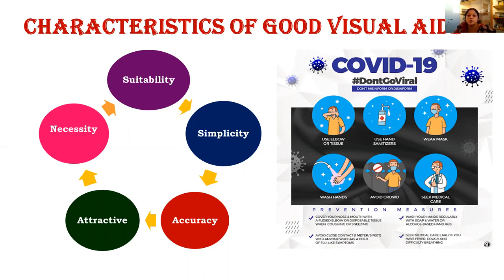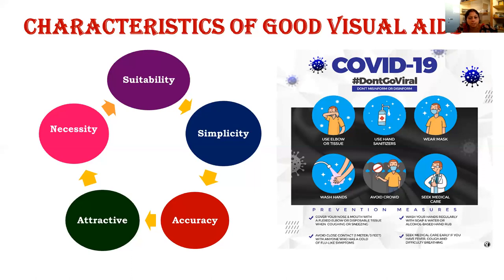The next characteristic is simplicity. Don't make your visual aid very complicated such that it confuses your audience. Always present it in a simple way so that they can understand at one sight. As soon as they see the visual aid, they should get complete information. The next characteristic is accuracy — whatever information you give through your visual aids must be accurate. Don't present things that are haphazard or lack an authentic source, or that involve unproven technologies.